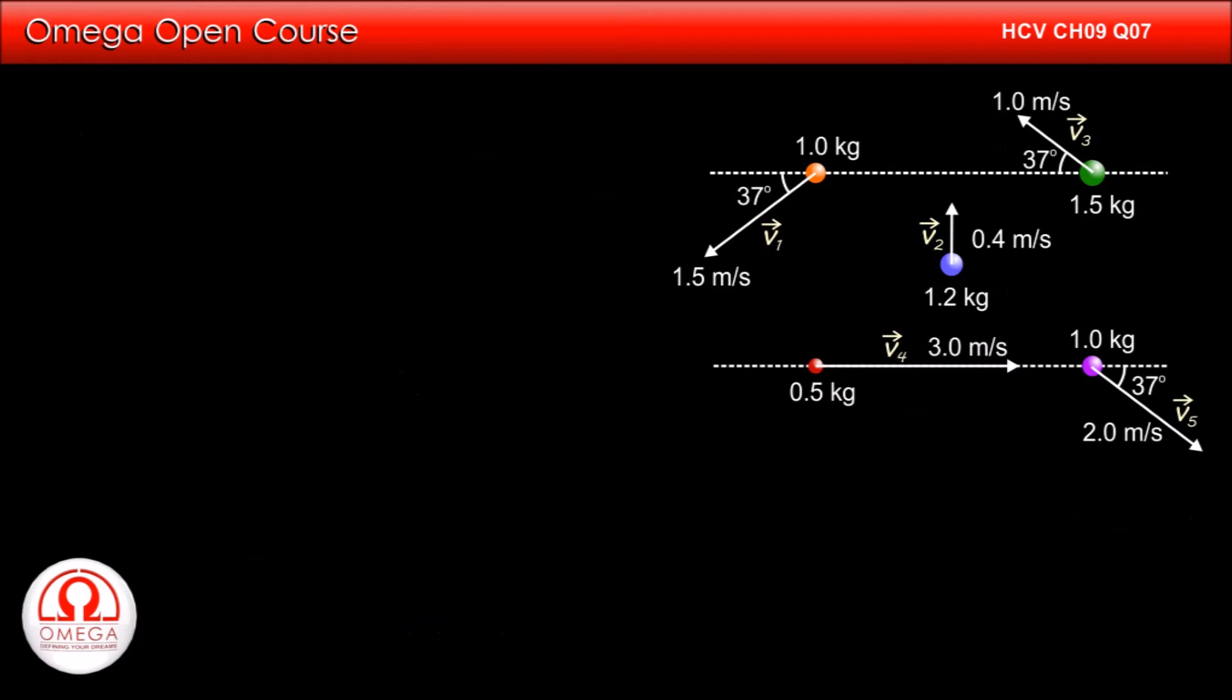Now the velocity of center of mass is given by summation of m i into vector v i divided by summation m i. What this means is we can get velocity of center of mass by taking sum of the products of mass and velocity of all the particles and then dividing it by total mass of the system.